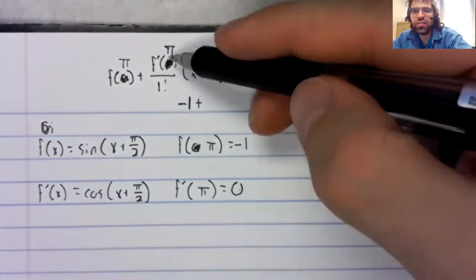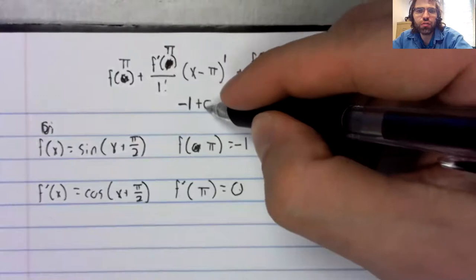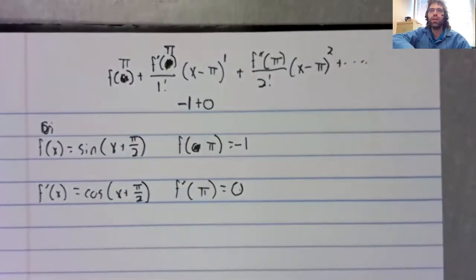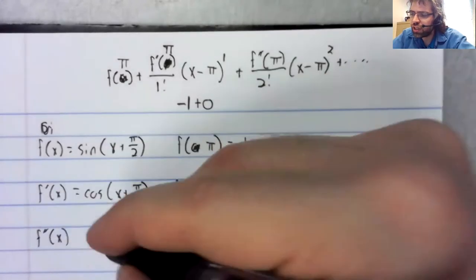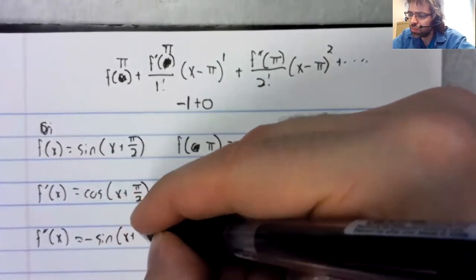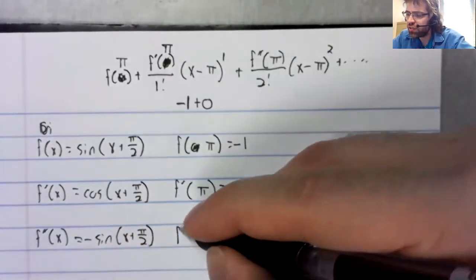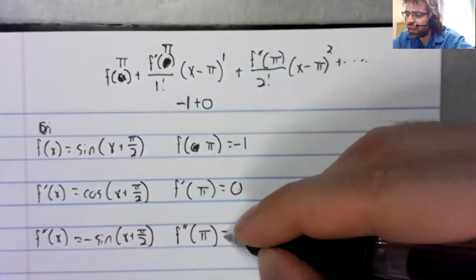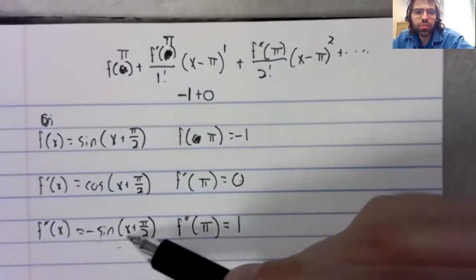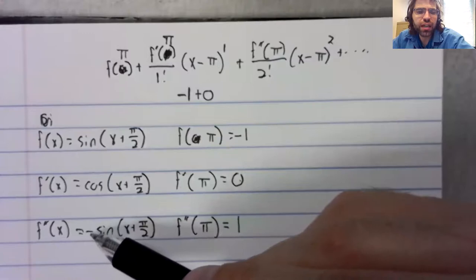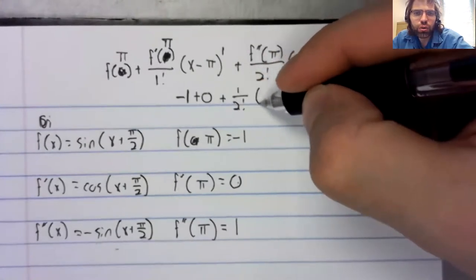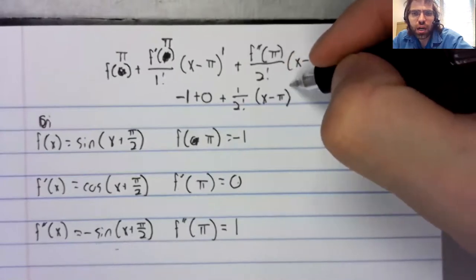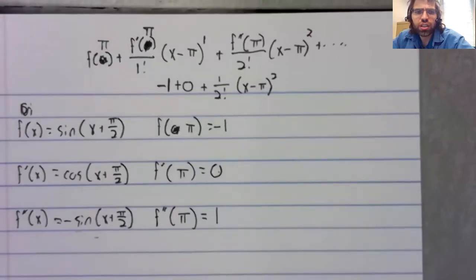Our next term is zero, which makes this whole thing zero. That doesn't count. We're looking for the first four non zero terms. We keep going. The second derivative is the negative sign. The second derivative at pi is positive one. And then this cancels. So this gives us one over two factorial times X minus pi squared. And you just keep this up.